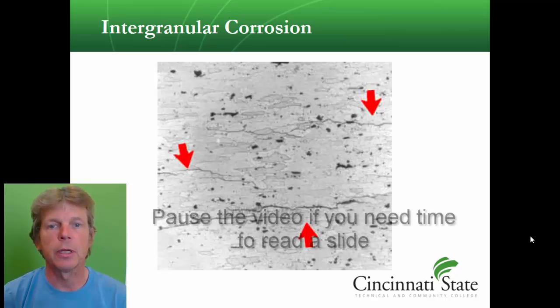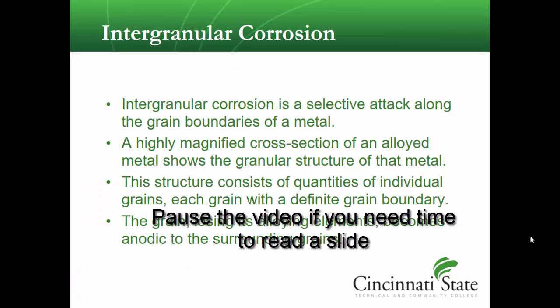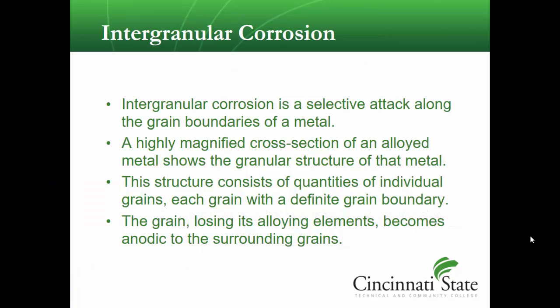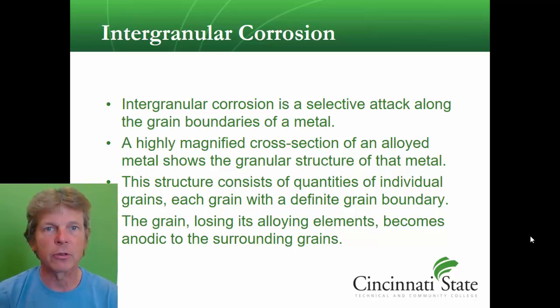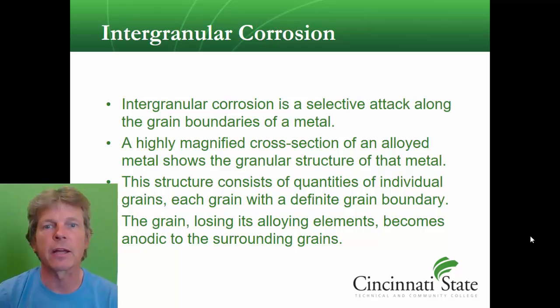Here's intergranular corrosion, and this is what it looks like. Intergranular corrosion is a selective attack along the grain boundaries of the metal. The word 'intergranular' has 'grain' in it, and the way we can tell it is it looks like little grains of sand. If you get a magnifying glass and look down at it, intergranular corrosion will look like grains of sand.